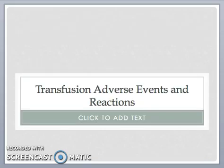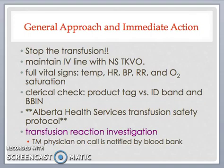Now let's discuss transfusion adverse events and reactions. The first step in approaching a suspected transfusion reaction is to stop the transfusion, and then to maintain the IV site by running a normal saline solution. Pre- and post-transfusion vital signs — temperature, heart rate, blood pressure, respiratory rate, and oxygen saturation — should be obtained and compared. A clerical check at the bedside is done to determine whether the correct product was transfused to the correct patient, comparing the information on the product tag against the patient's identifying information on their ID bands and blood bank identification number, known as the BBIN. The remaining product bag and all IV tubing should then be returned to the blood bank, and the back of the product tag should be completed to indicate the pre- and post-transfusion vital signs and all symptoms and signs associated with the reaction.